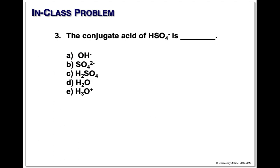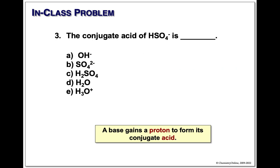Just to drive home this concept: if we have hydrogen sulfate HSO₄⁻, what is its conjugate acid? Whatever it was before gaining the proton — put the proton back and we get sulfuric acid H₂SO₄.